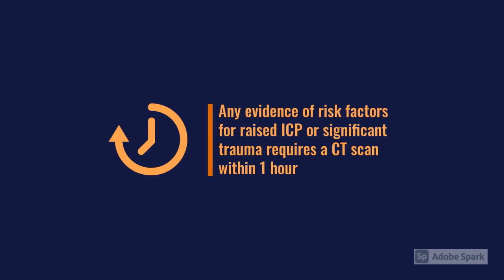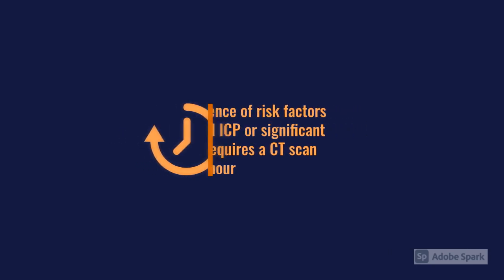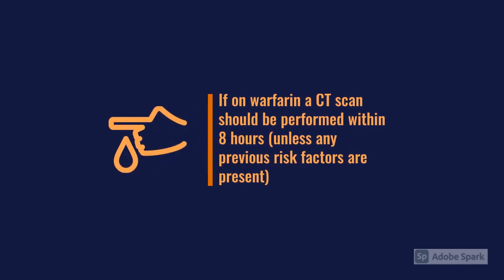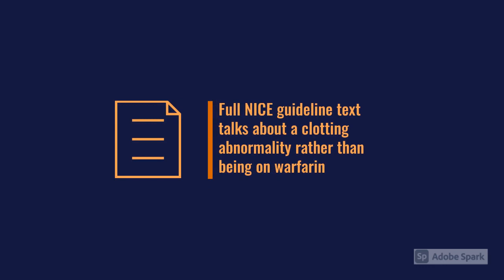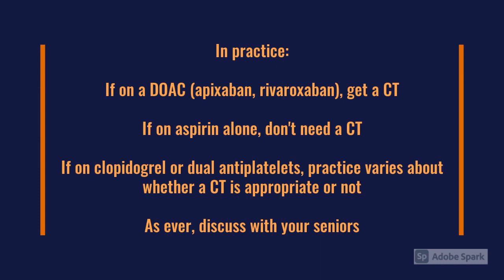One of the key things we need from the history is anticoagulant use. The NICE guidelines flow chart mentions warfarin specifically, but the full text talks about clotting abnormality more broadly. In practice, we consider the DOACs — rivaroxaban, apixaban — to be equivalent to warfarin. We don't tend to consider antiplatelets as equivalent, though there are caveats: dual antiplatelets may lower the threshold for CT scanning, and clopidogrel appears to have higher bleeding rates than aspirin alone.